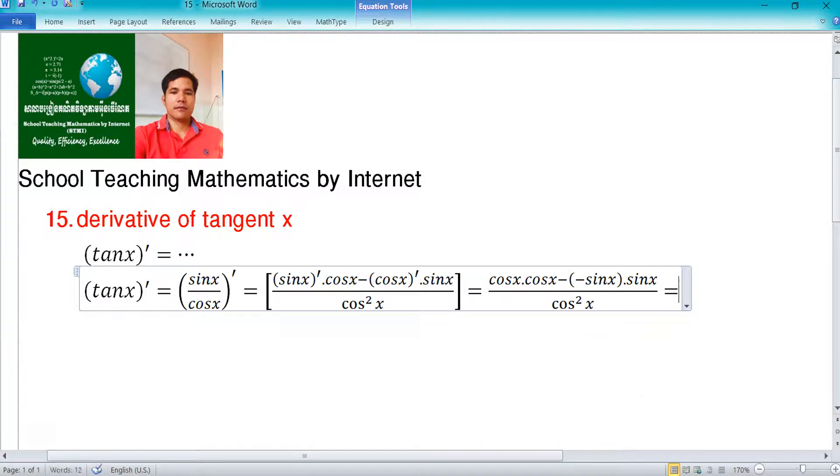Then in here I get cos square x plus sine square x divided by cos square x.